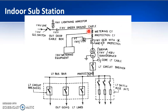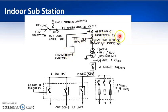A metering CT and a PT are also required — a potential transformer and a current transformer. The metering CT is shown here. For the potential transformer, this 11 kV supply is stepped down to 110 volts using a transformer and then given to a metering equipment. The system also houses a protection CT in order to protect against any kind of faults.